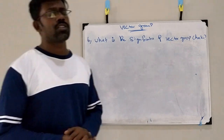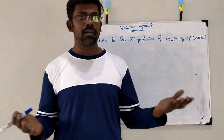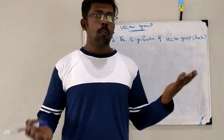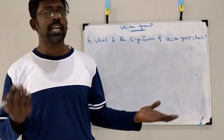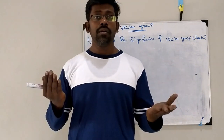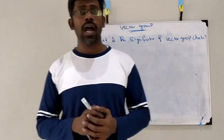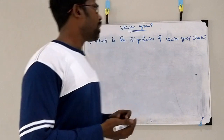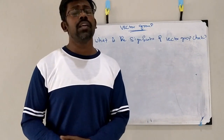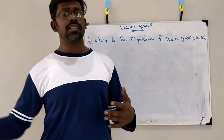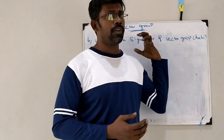Our next question is: what is the significance of vector group checking? Vector group checking is very, very important. For parallel transformer operation, both transformers should have the same MVA, same impedance, and same vector group. If they do not have the same vector group, the phasor angle difference will create a circulating current between them, producing heat and losses. Also, before connecting a transformer to the grid, they must match the phasor angle of the transmission line — for all this, we need to check the vector group, which is very, very important.